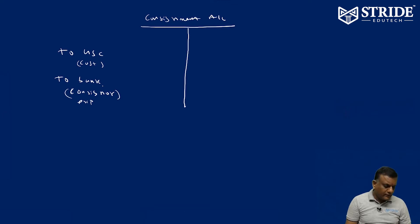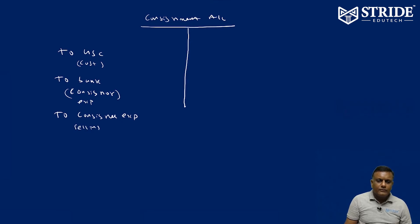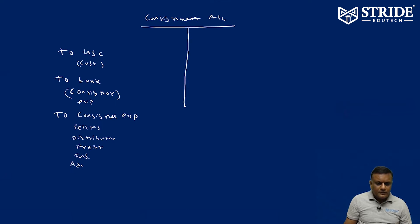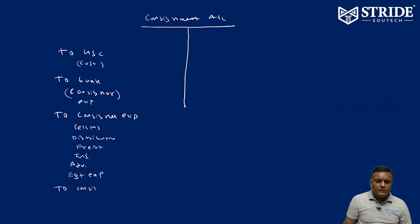Consignor expenses are always of a non-recurring nature, to bank. Consignee expenses normally include selling and distribution expenses such as freight, insurance, advertisement, and establishment expenses. These are all consignee expenses, along with consignee commission.